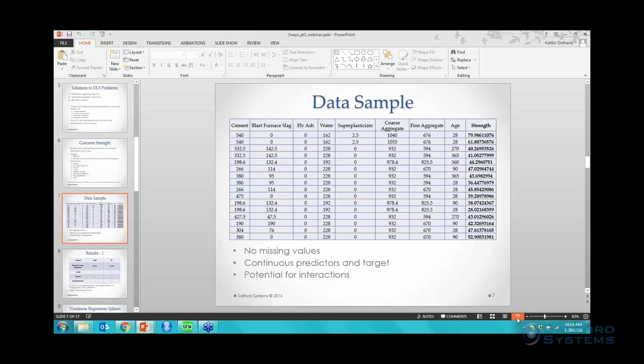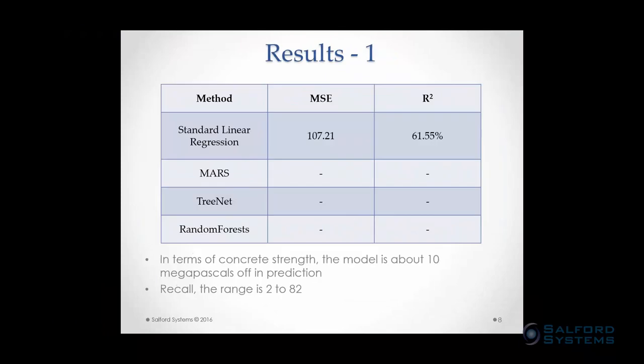Switching back to the slides to fill in a results table: in terms of concrete strength, this model is off by about 10 megapascals — that's the root of the mean squared error. Recall that the range is 2 to 82, so being off by 10 is pretty significant. Now let's compare to the modern data mining algorithms.